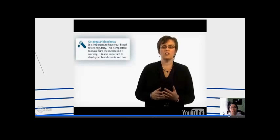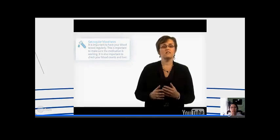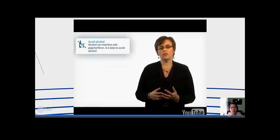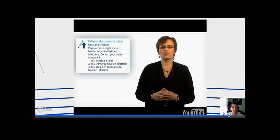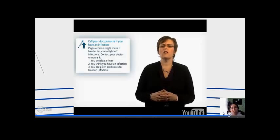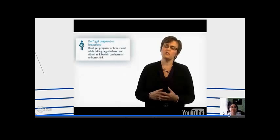There are four things you need to do when taking PEG interferon and ribavirin. First, it is important to get regular blood tests to make sure the medicine isn't affecting your blood counts. Second, alcohol can interfere with PEG interferon, so it is best to avoid all alcohol. Third, PEG interferon can make it slightly harder to fight off infections — tell your doctor or nurse if you develop a fever. And finally, don't get pregnant or breastfeed while taking PEG interferon and ribavirin, as ribavirin can harm an unborn child.